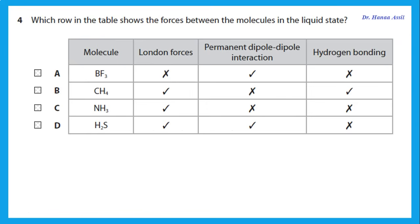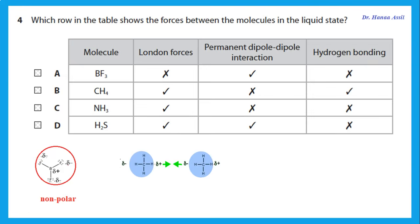Which row shows the forces between molecules in the liquid state? For BF3, each B-F bond is polar but overall the molecule is non-polar. Does BF3 have London forces? Any simple molecular structure has London dispersion forces, so saying there are no London forces in BF3 is wrong.